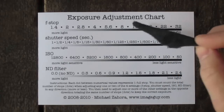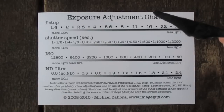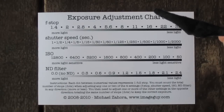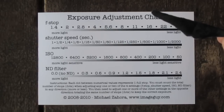Moving from f/16 down to f/5.6 is one, two, three dots — or three stops. You need to adjust your other settings in the opposite direction by the same amount of stops.